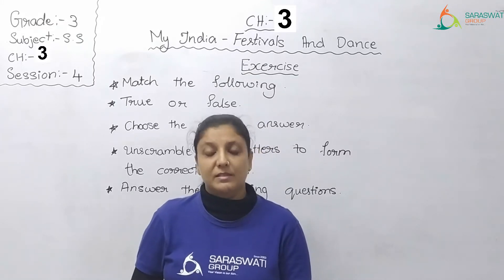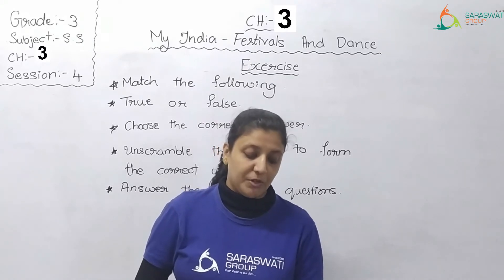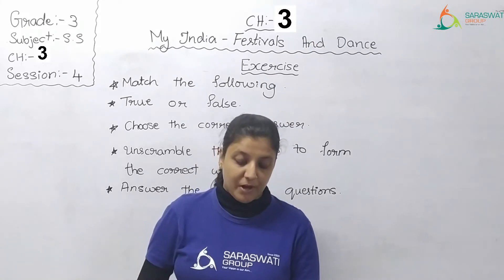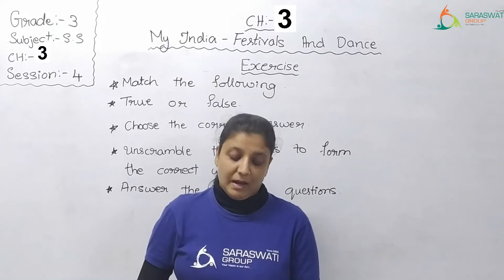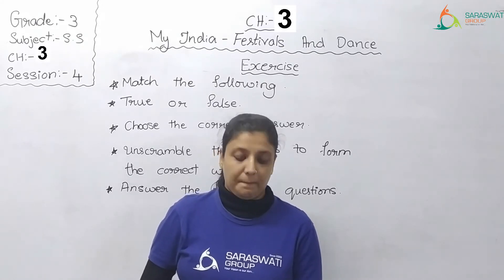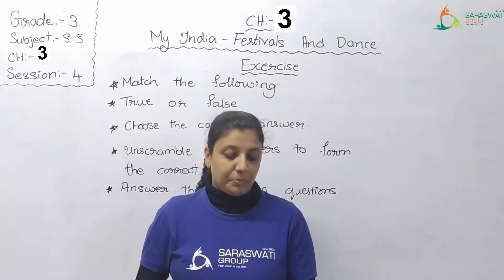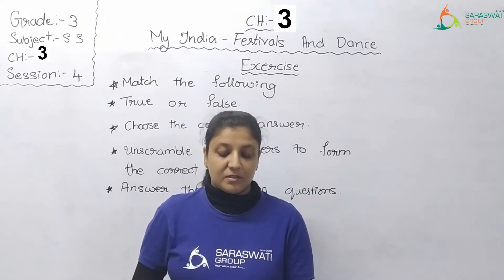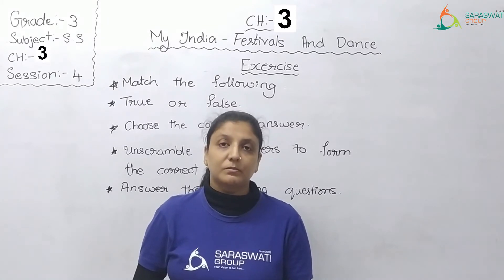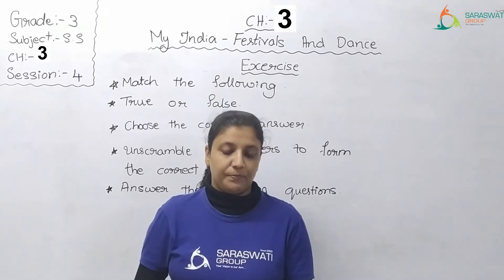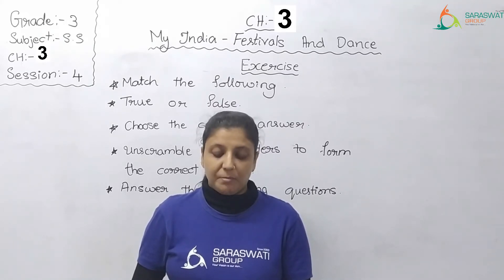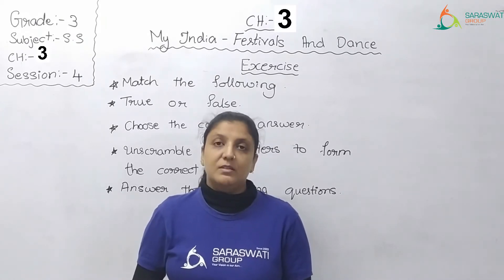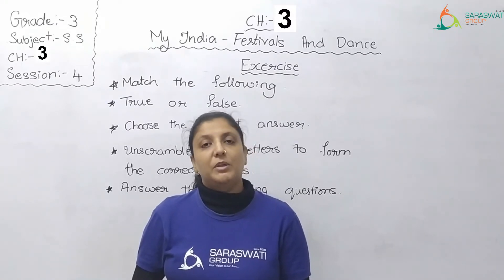Column A, Option B: Garba — answer is Column B, Option 5: Gujarat. Column A, Option C: Ghumar — answer is Column B, Option 2: Rajasthan. Column A, Option D: Lavni — answer is Column B, Option 1: Maharashtra. Column A, Option E: Chau — answer is Column B, Option 4: Odisha. So now let's check: match A with 3, B with 5, C with 2, D with 1, and E with 4.